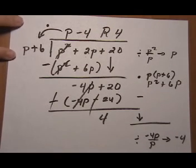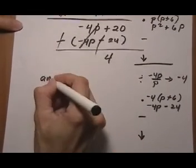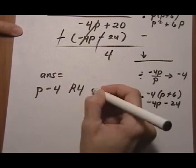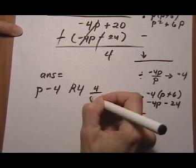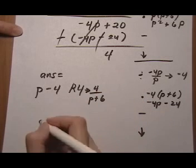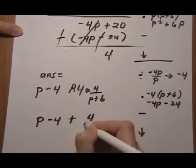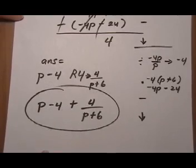To write the final answer, and I'm going to move the final answer down below here so we can look at it a bit better. We don't want to leave it with an R4. We want to express this remainder just like we do with arithmetics. 4 is the remainder is the numerator, and the denominator is the divisor, p plus 6. So our final answer is p take away 4, and this is a positive 4, so we're going to say plus 4 over p plus 6. And that would be the final answer. Thank you.